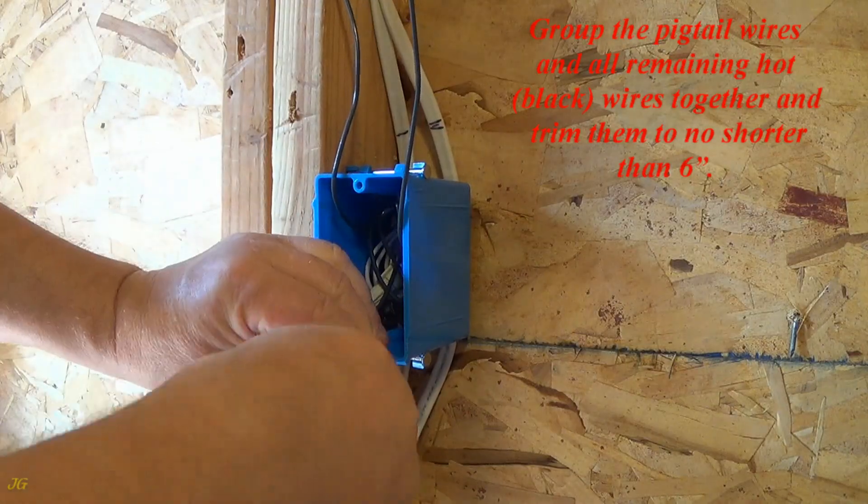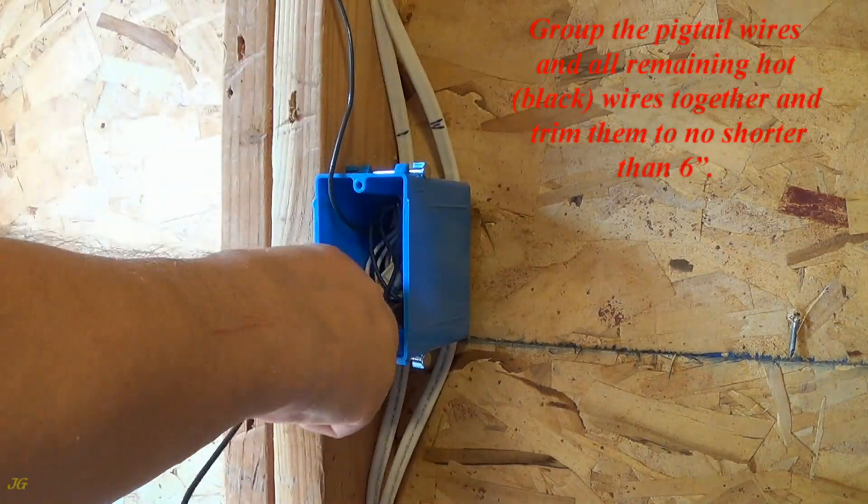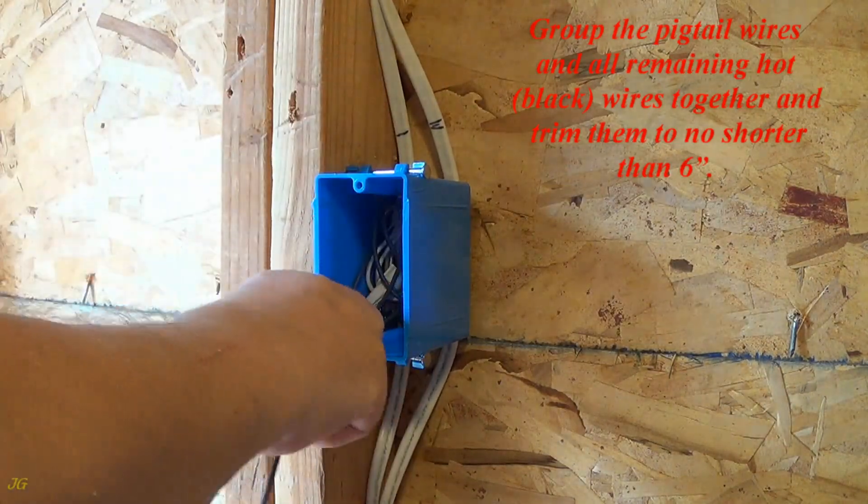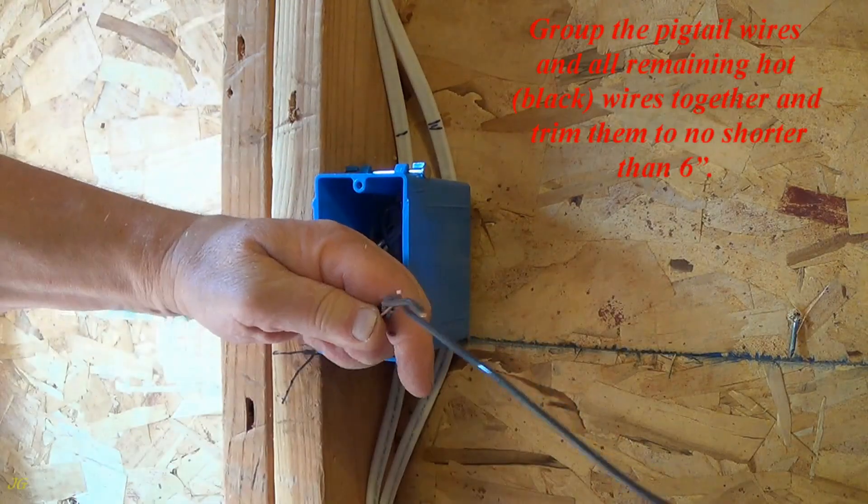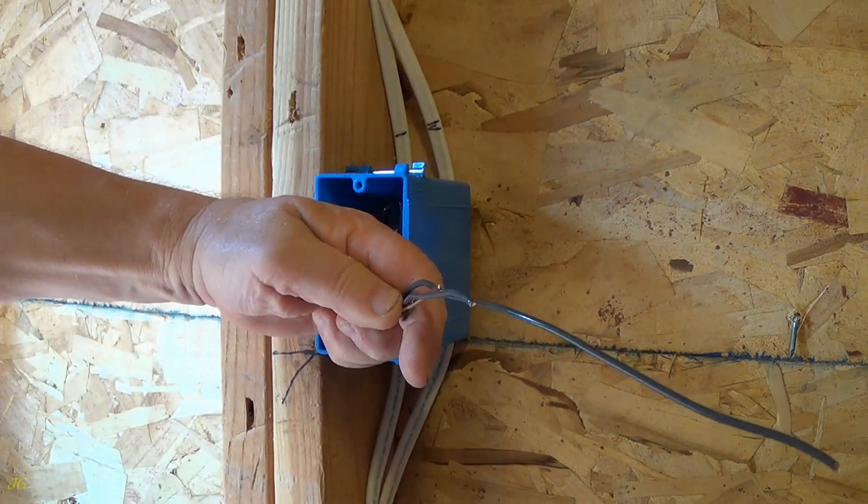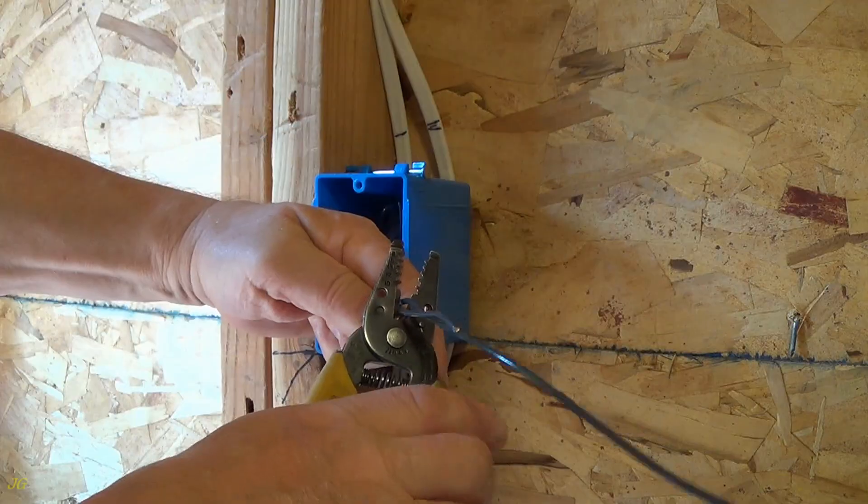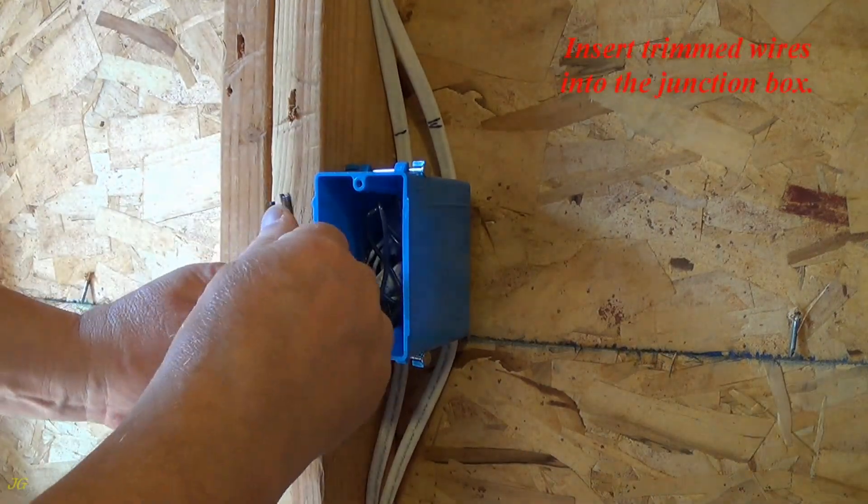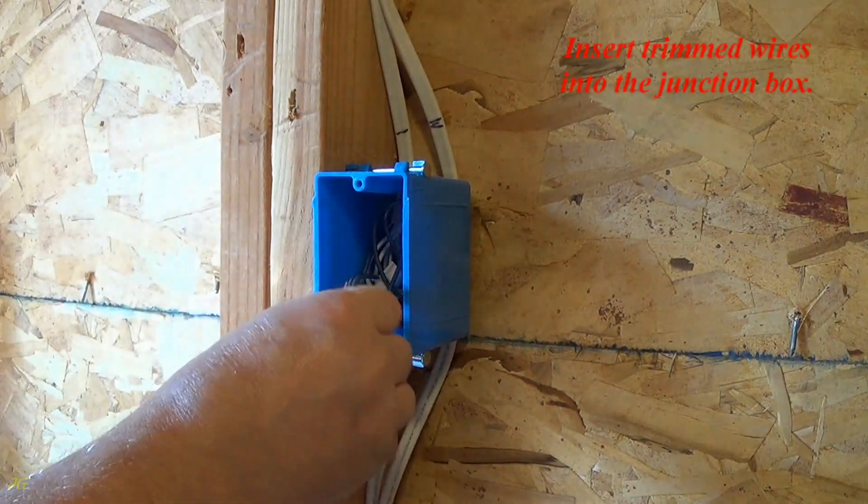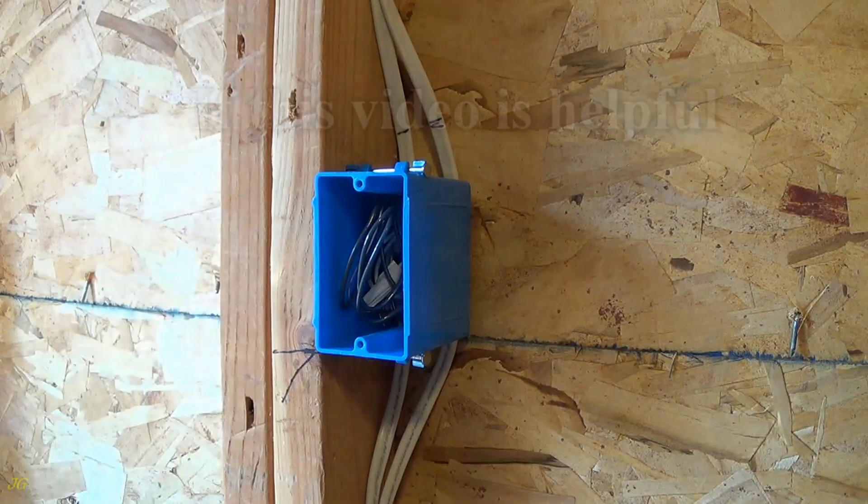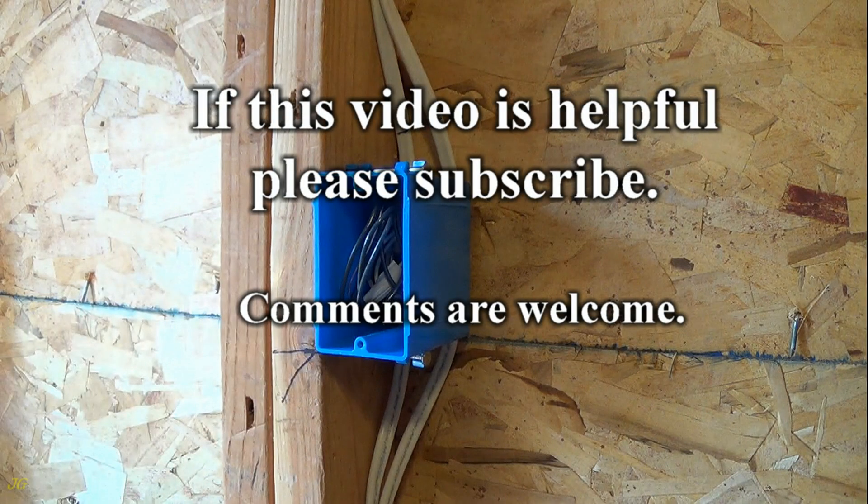Group the pigtail wires and all remaining hot, black, wires together and trim them to no shorter than 6 inches. Insert trimmed wires into the junction box. If this video is helpful please subscribe.